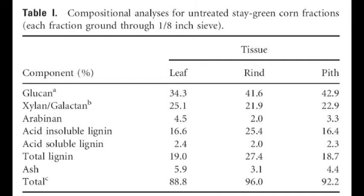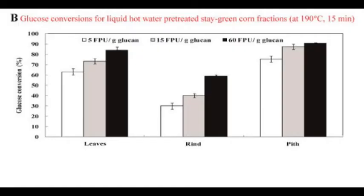Initially, the composition of the various tissue types were very similar. However, we discovered that the yield of sugars that you could obtain from each tissue type was significantly different.